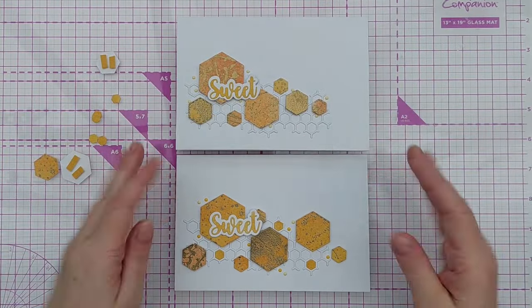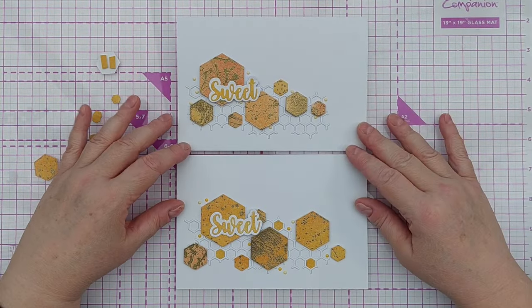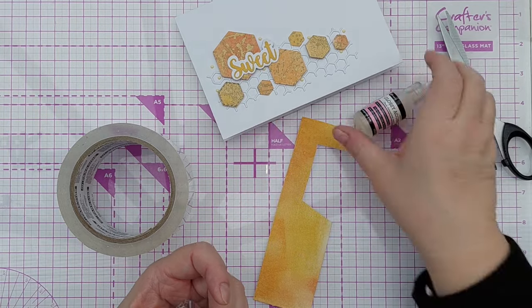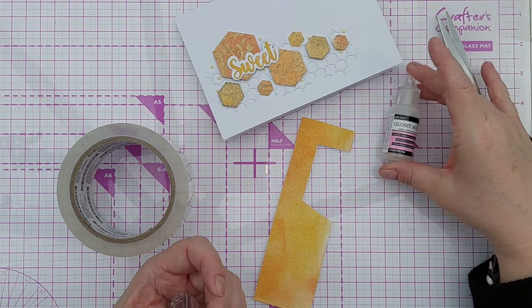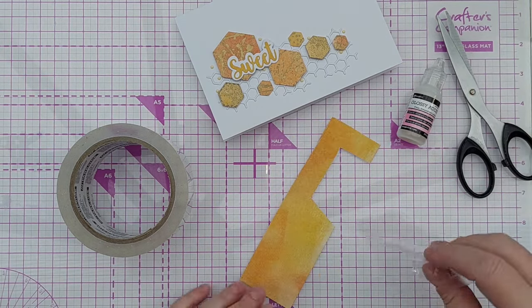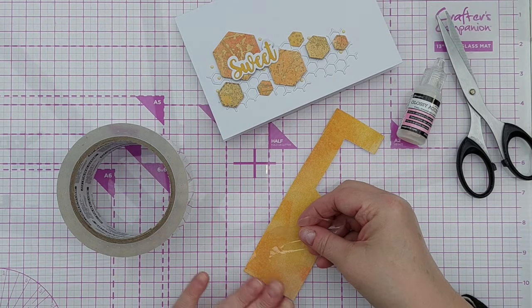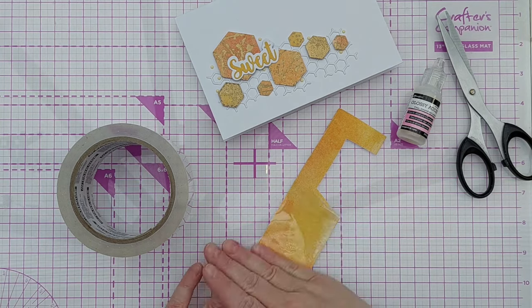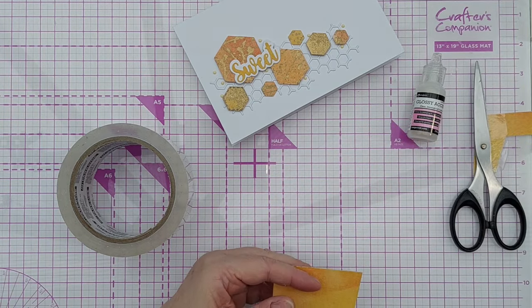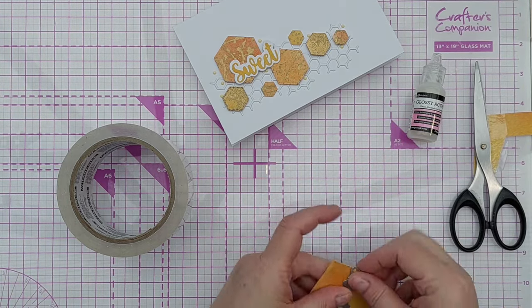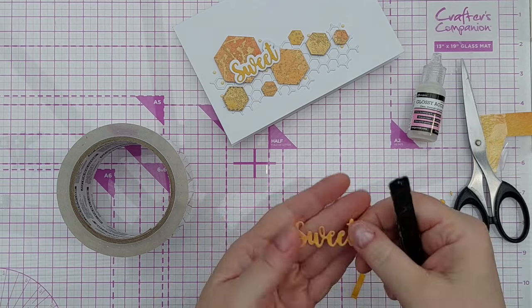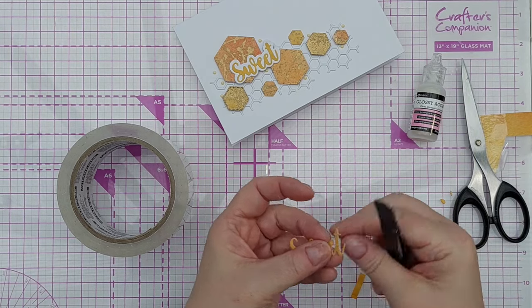So those are the two cards, I'm really pleased with how they've both turned out. Now I'll give you some ideas of ways to adapt them. One thing you could do is add a bit of gloss to your sentiment to help it stand out amongst all that shimmery gold. If you're steady-handed you could use glossy accents. If you're not so steady-handed or if you just want to do something really quick that is instantly dry, take some packing tape, clear packing tape, pop it on your colored bit of paper, and then run that through your die cutting machine. There you have a shiny sentiment.